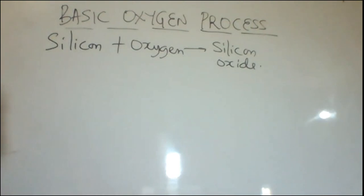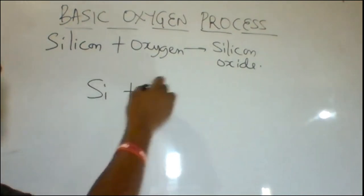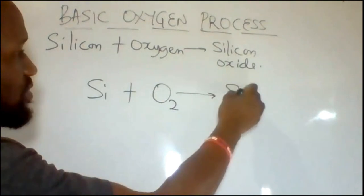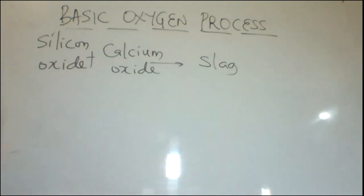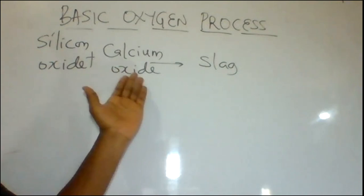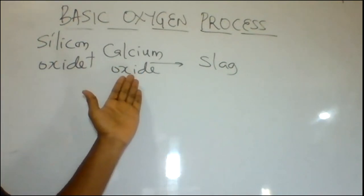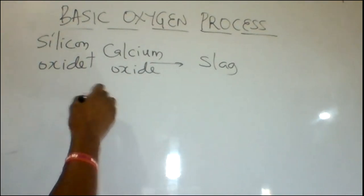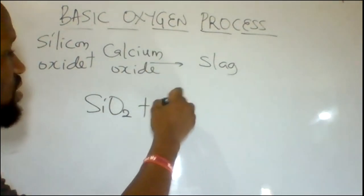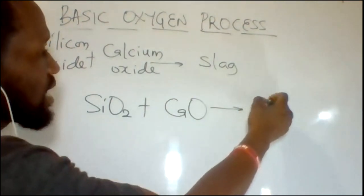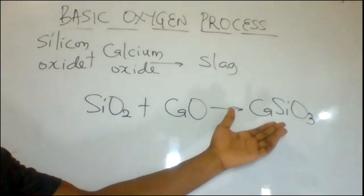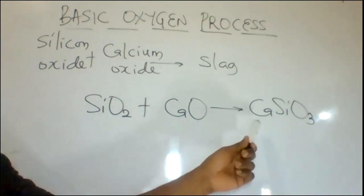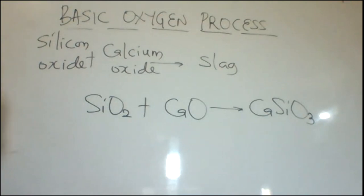The other impurity, silicon, also combines with oxygen to form silicon oxide: Si + O2 → SiO2. Silicon oxide then reacts with calcium oxide from decomposing limestone to form slag, which is calcium silicate: SiO2 + CaO → CaSiO3. This slag is lightweight compared with molten iron, so it can be decanted off and removed from the process, therefore producing a purer form of iron.